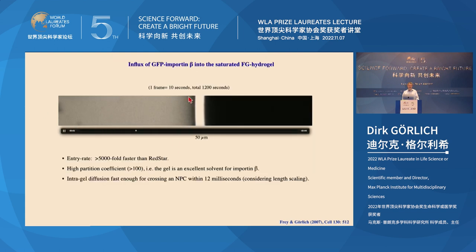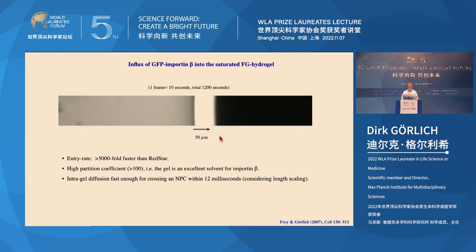The importin was added to the buffer side, first binding to the buffer-gel boundary, then moving into the gel quite quickly — crossing a distance of 50 micrometers within half an hour. Although half an hour is much longer than the 10 milliseconds needed to pass a nuclear pore complex, we are looking at a 50-micrometer distance — a thousand times longer than the 50 nanometers needed to cross a nuclear pore. Since diffusion time scales with the square of distance, this movie would run a million times faster at the nuclear pore scale, giving a requirement of about 12 milliseconds — very consistent with the assumption that such a gel fills the center of the nuclear pore channel.